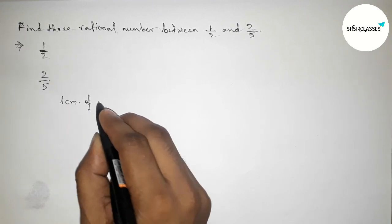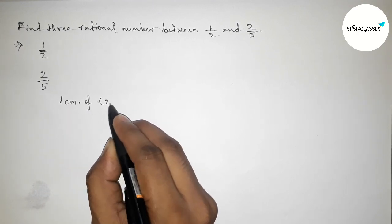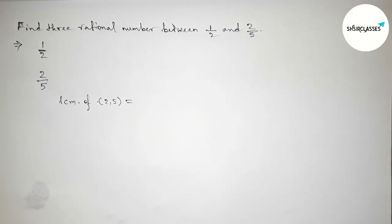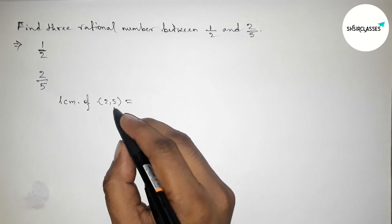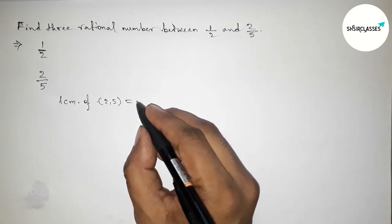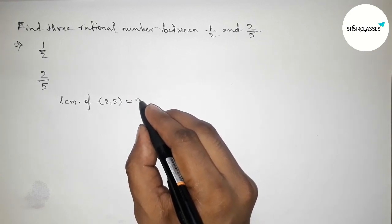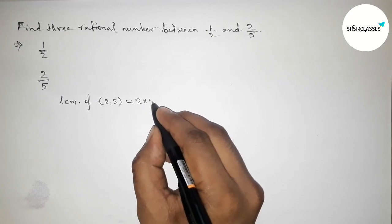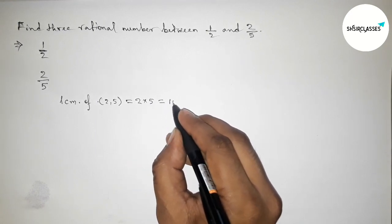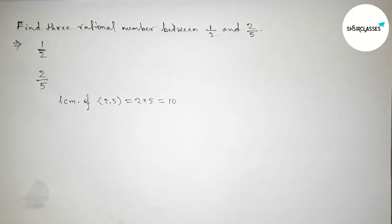First we have to find the LCM of 2 and 5. Here 2 and 5 are prime to each other, so the LCM will be their product: 2 into 5, that is 10.